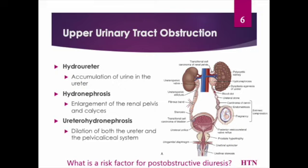The increased pressure is transmitted to the glomerulus, decreasing glomerular blood flow and ultimately decreasing GFR or glomerular filtration rate. Dilation of the ureter is called hydroureter, with accumulation of urine causing the dilation. Dilation of the renal pelvis and calyces proximal to the blockage leads to hydronephrosis — an enlargement of the renal pelvis and calyces graded by severity. Ureteronephrosis refers to dilation of both the ureter and the pelvi-calyceal system.